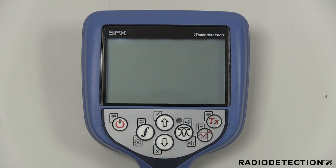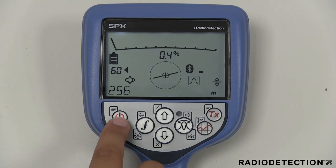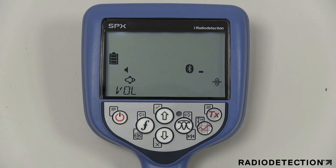Firstly, ensure the locator is switched on by pressing the power key for 2 seconds. To navigate the locator menu, press the power key briefly to enter the menu.